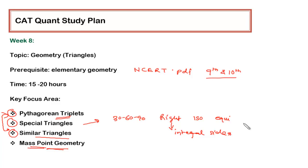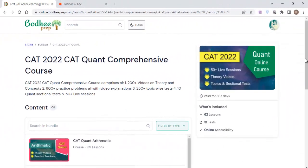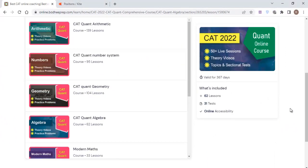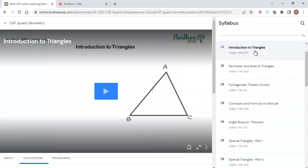Now let me show you from the course where you'll be finding it. Once you log into the course, you have to go into the CAT quant geometry folder. All the geometry related things are put in this particular folder. As you can see, it starts with the introduction of triangles, then basic mensuration from triangle—that is perimeter and area, then Pythagorean triplet.